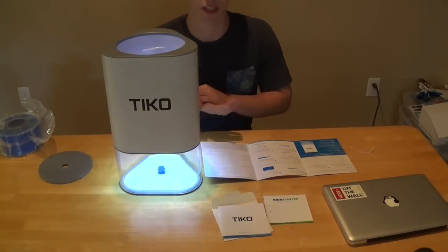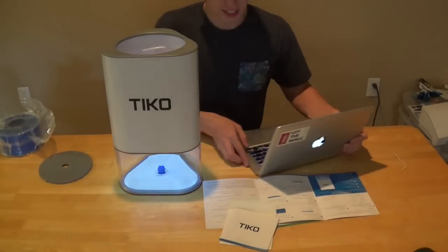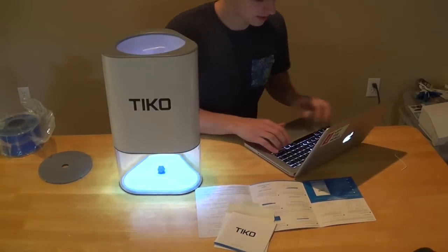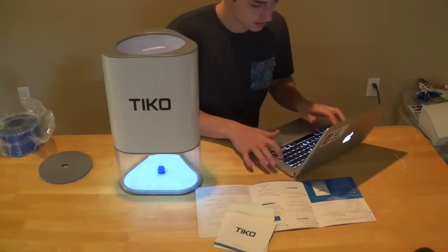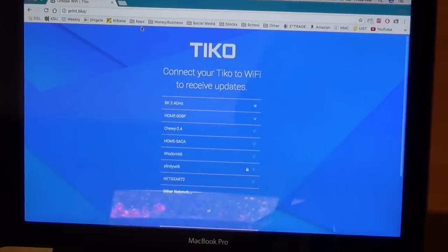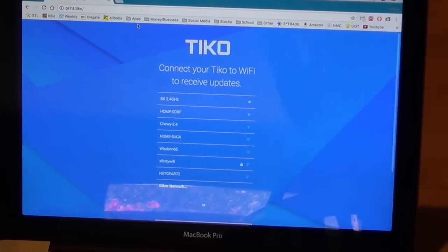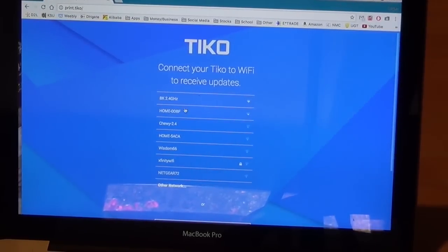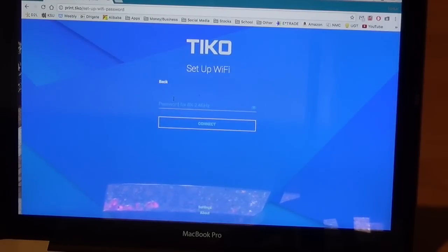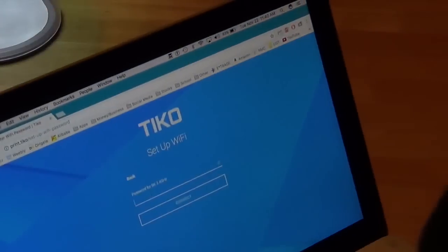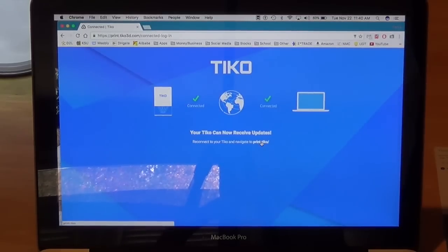When it goes dim, it looks like it's downloading an update. It connects by WiFi. Once we connect it to the WiFi, you just go to print.TECO and this is going to allow you to see the interface of it. So we're going to connect it to my WiFi here and navigate back to print.TECO.